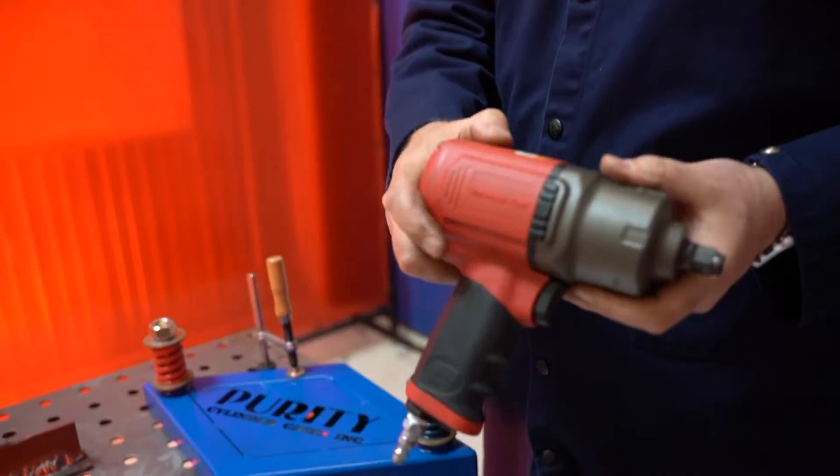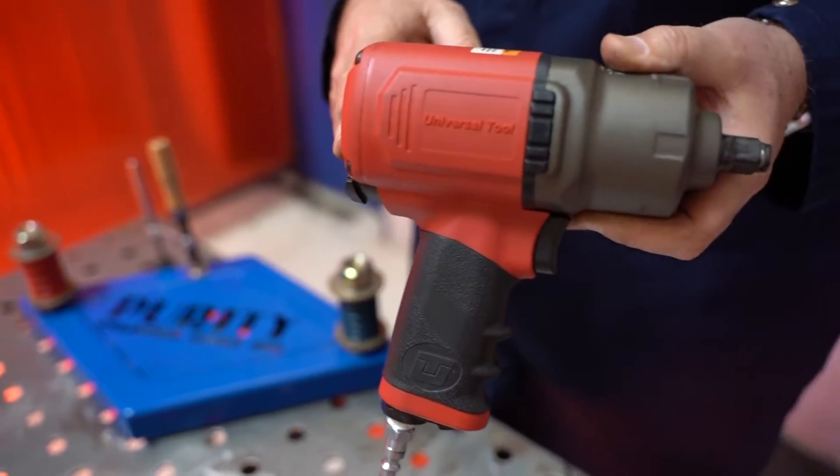We're going to be looking at half-inch impacts today. The Universal Tool 8165R composite pistol grip impact wrench.